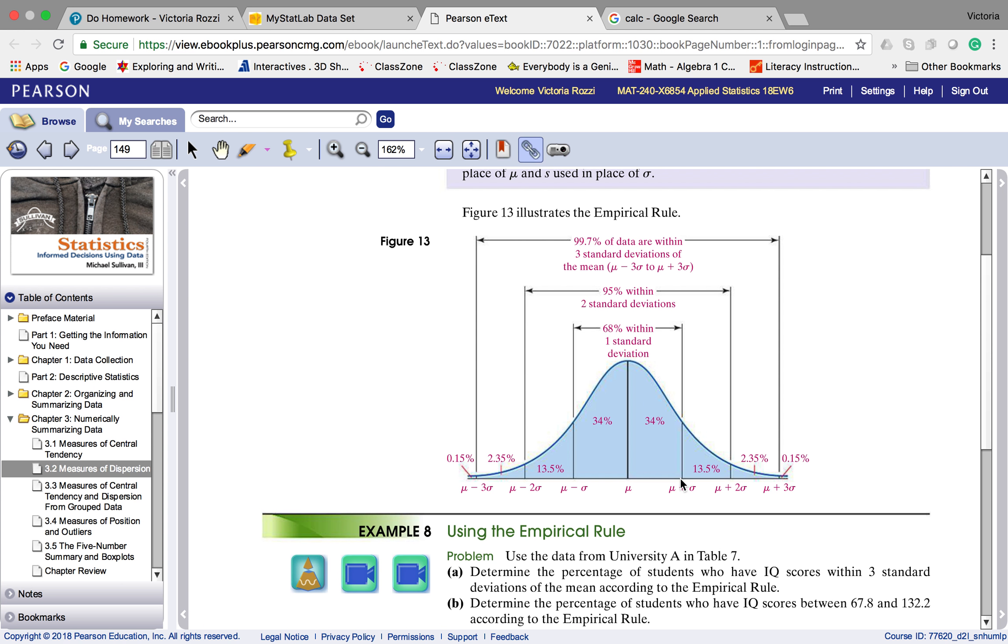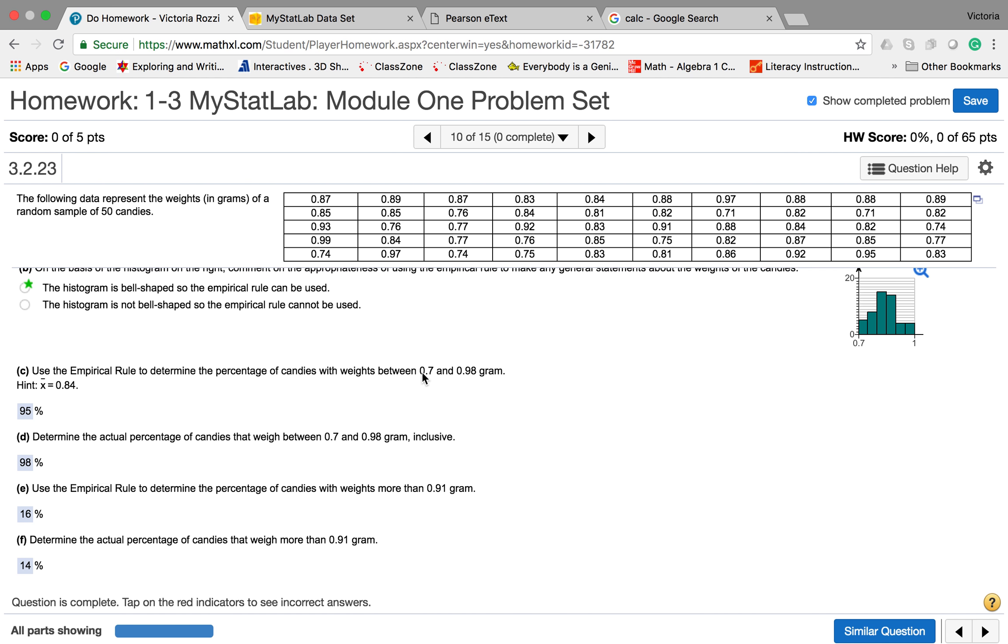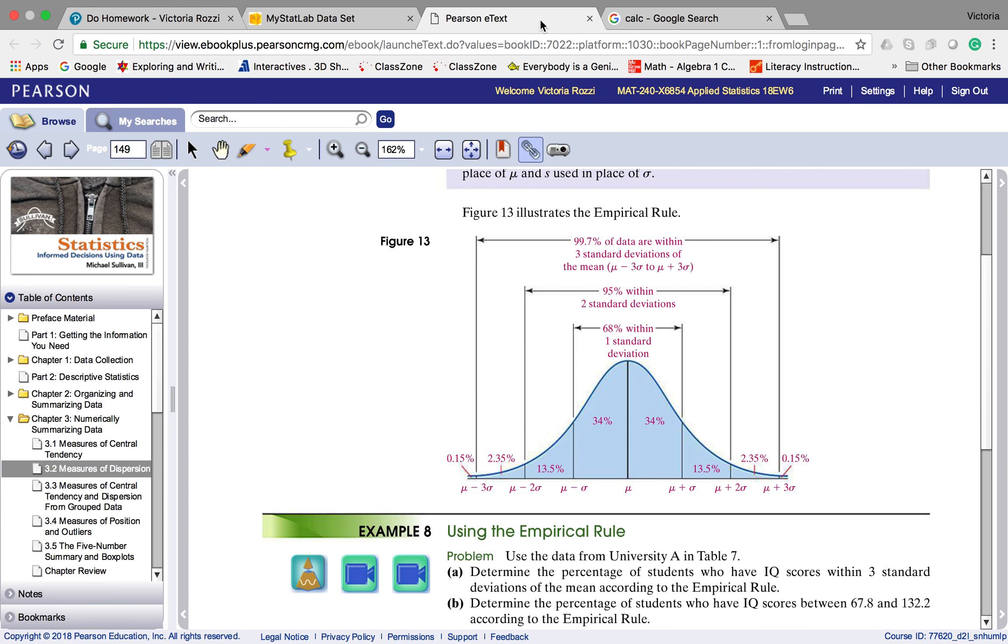We have to say, where are the values that they're talking about? And then I'm going to add up the percentages that are encompassed in those values. The ones that they're talking about here are 0.7 and 0.98. So again, I'm hoping that you wrote down those values. 0.7 is actually two standard deviations below the mean, which would be here. And 0.98 is two standard deviations above the mean, which is over here.